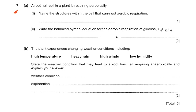The plant experiences changing weather conditions including high temperature, heavy rain, high winds, and low humidity. State the weather condition that may lead to a root hair cell respiring anaerobically and explain your answer. The answer is heavy rain, because waterlogging means there are no air spaces or oxygen available, so the root will respire anaerobically.